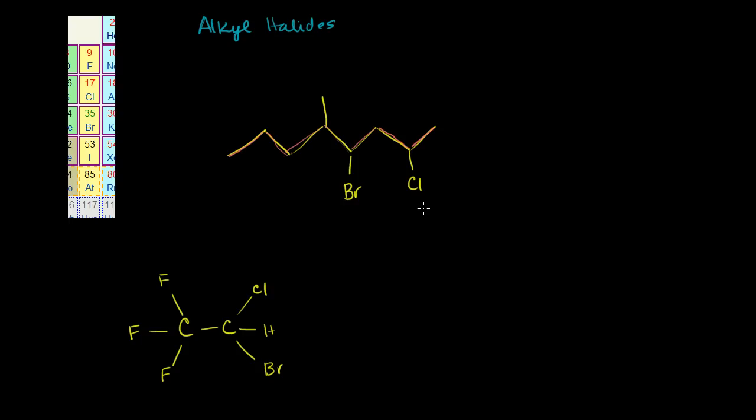And we want to start at the end where we're going to run into either some type of halide first or some other type of branch off of it - just something attached to the carbon chain other than a hydrogen. So we're going to start at this end. So we're dealing with an octane. Our main chain has eight carbons.